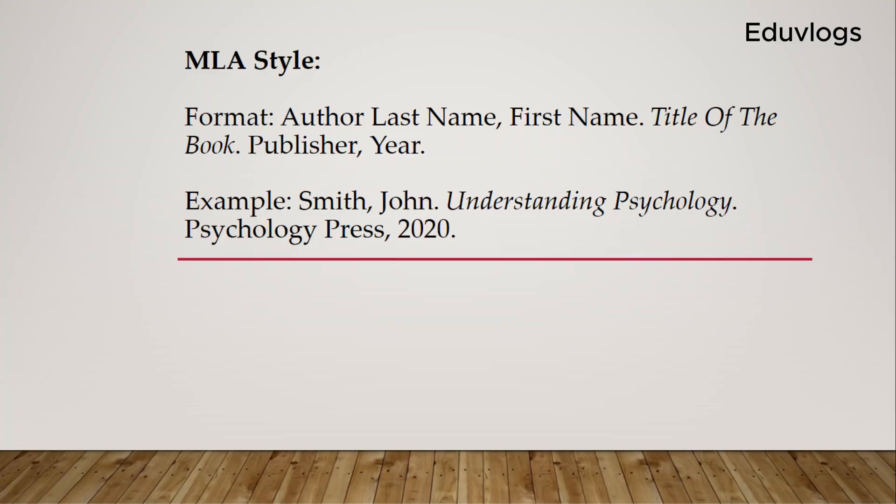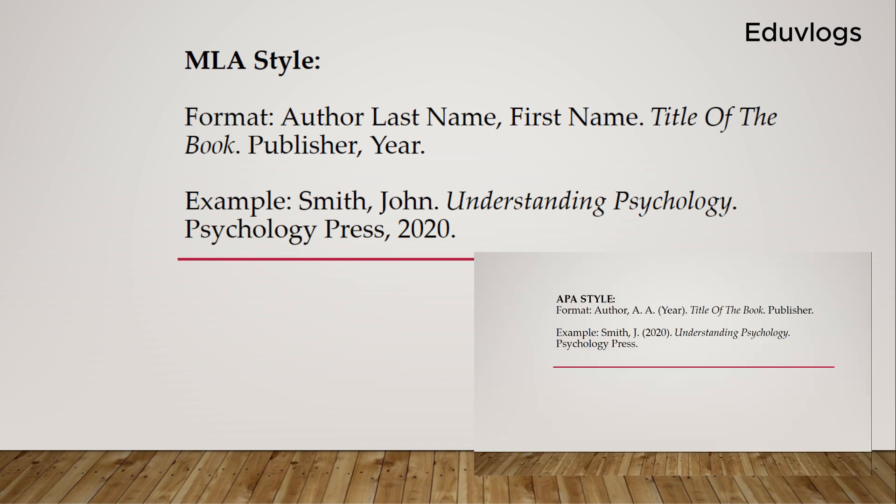If you want to follow the MLA style, the format for referencing is the author's last name and the first name in full, then the title of the book, the publisher, and the year. An example for the MLA style is: Smith, John, Understanding Psychology, Psychology Press, 2020. You can see that in MLA you write the author's surname and then the first name in full, unlike the APA style where you initialize the first name. Also, the year is not written before the title, unlike the APA style.